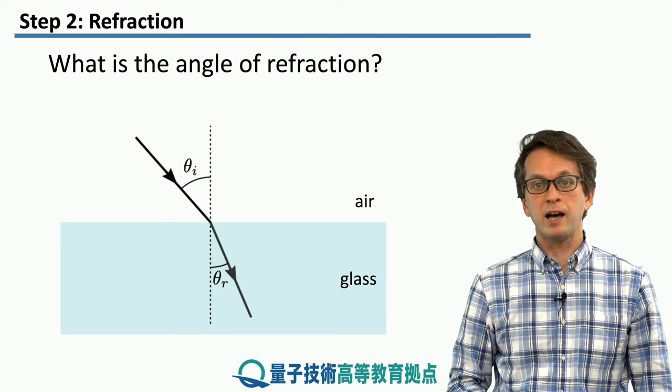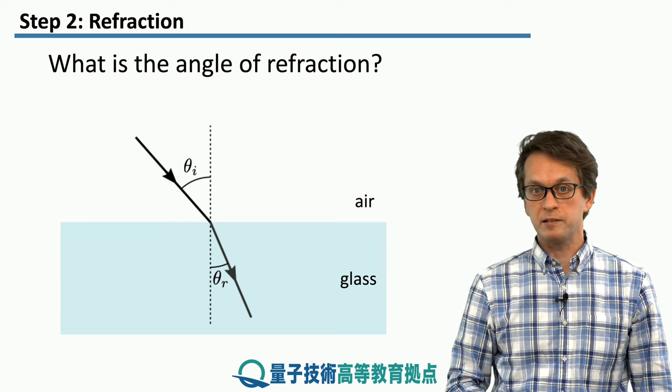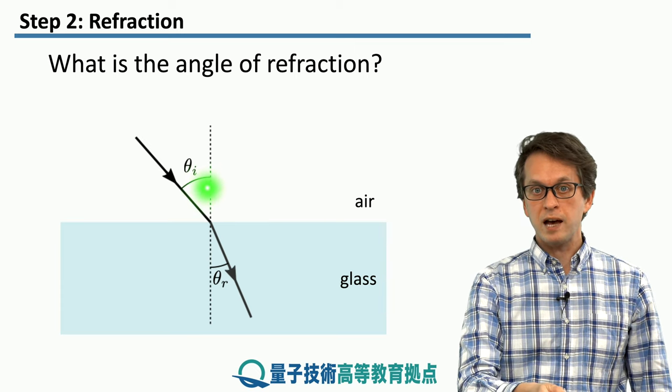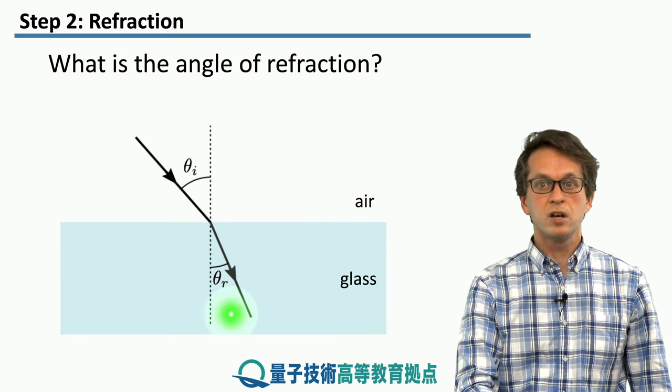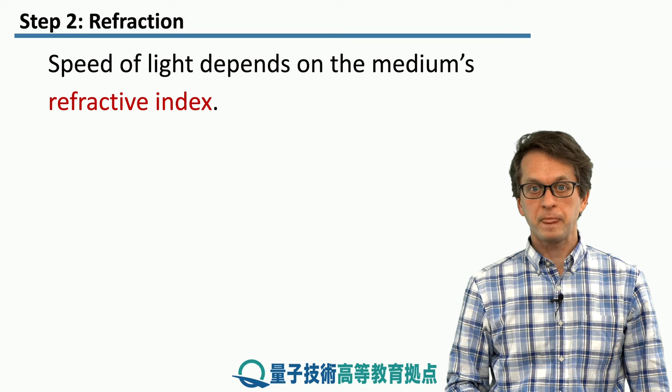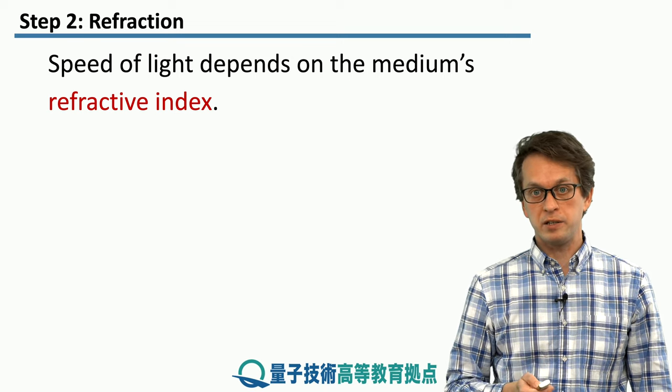Now let's talk about angle of refraction. This is going to be a little bit more complicated. As you can see from this image, the angle of incidence and angle of refraction are different. Let's see how we can actually compute that. For that, we need something called refractive index of a material.